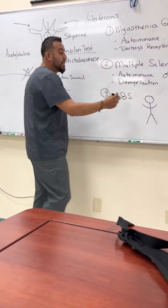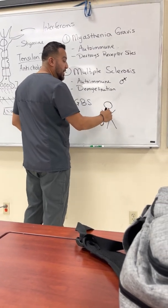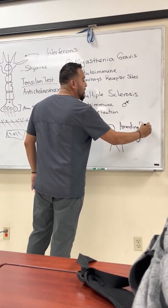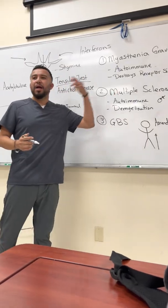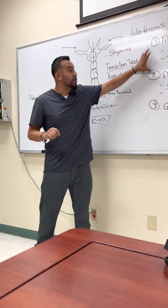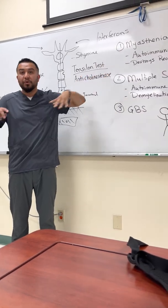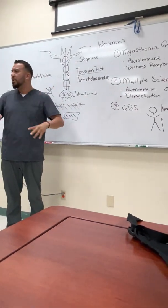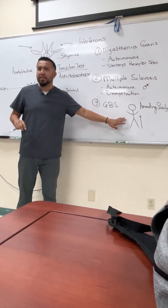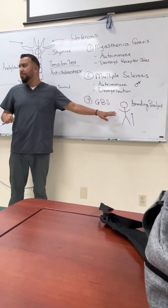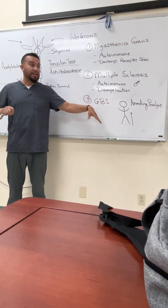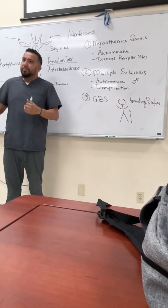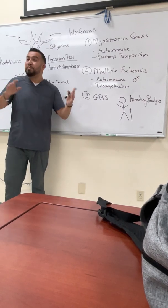In GBS, the immune system destroys the myelin sheath starting from the feet upward, causing ascending paralysis. This is a very unique manifestation not shared with multiple sclerosis or myasthenia gravis — those are systemic. GBS usually starts affecting the fingers first, then progresses toward the center. Anything that stimulates the immune system may trigger GBS, including vaccines, though that doesn't mean vaccines are inherently bad.